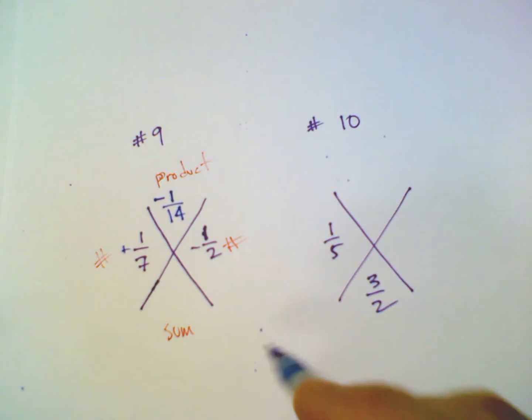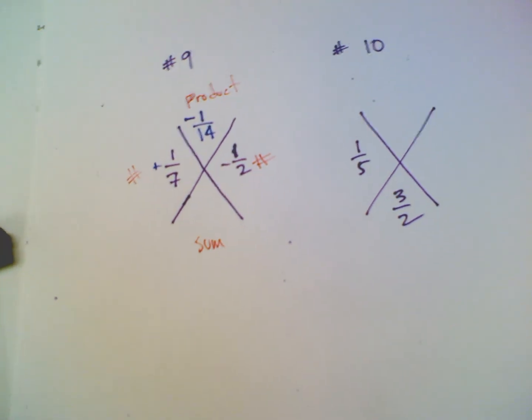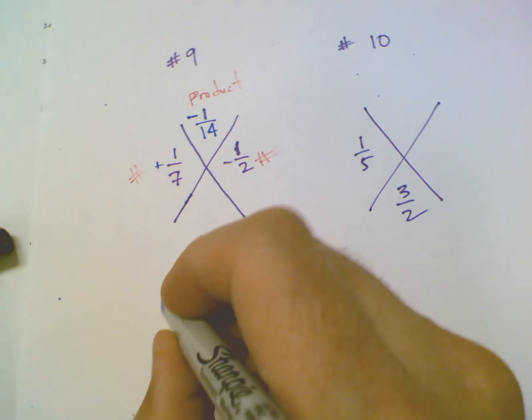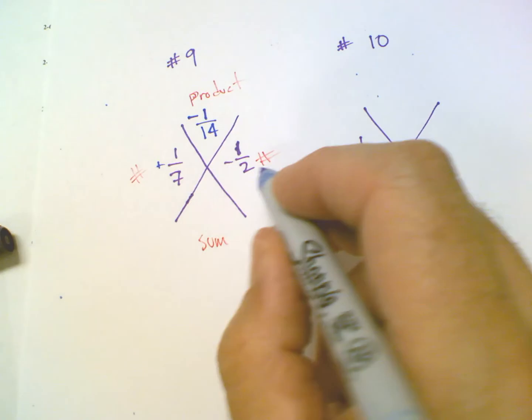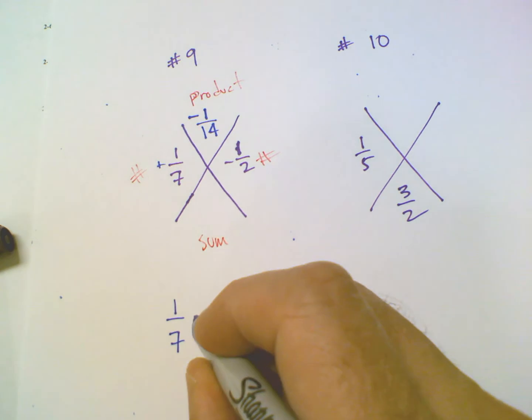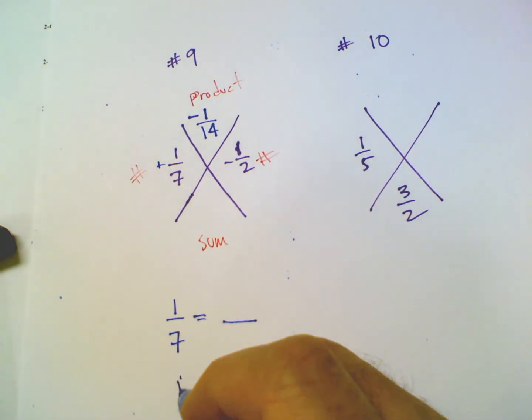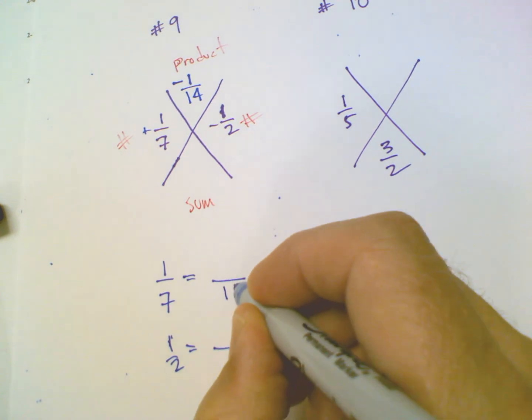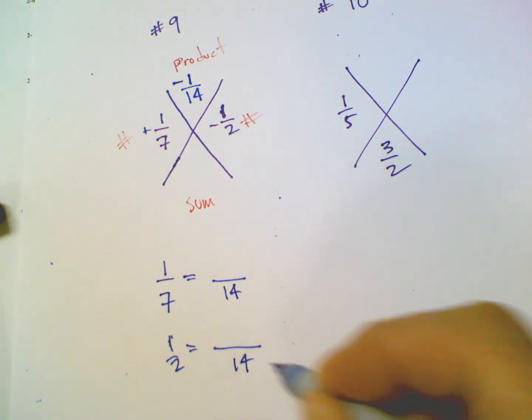The sum, a little trickier. The sum, in order to add fractions, you've got to have common denominator. So I need a denominator that's the same. So I've got to take and convert 1/7 into something and 1/2 into something that has the same denominator. So what's the common multiple here? The smallest, the least common multiple is 14.